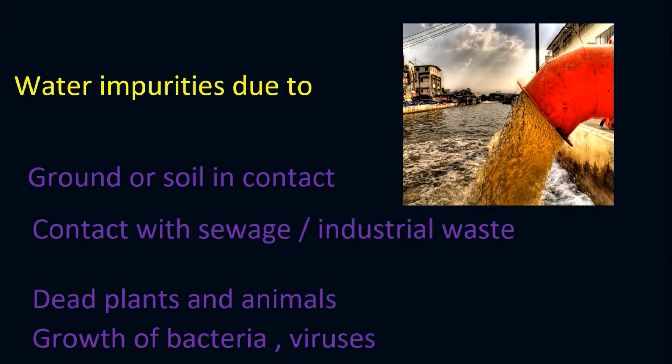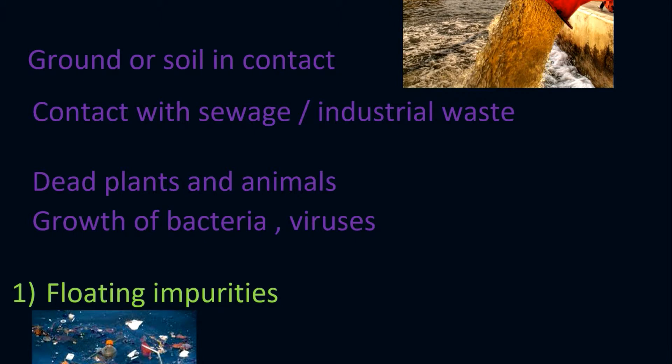The goal of this tutorial is to explain water impurities. Due to ground or soil contact with water, solid particles mix into the water, making it impure. Contact with sewage or industrial waste, trees throwing waste into rivers, and the growth of bacteria and fungi in water are all causes of water impurities.